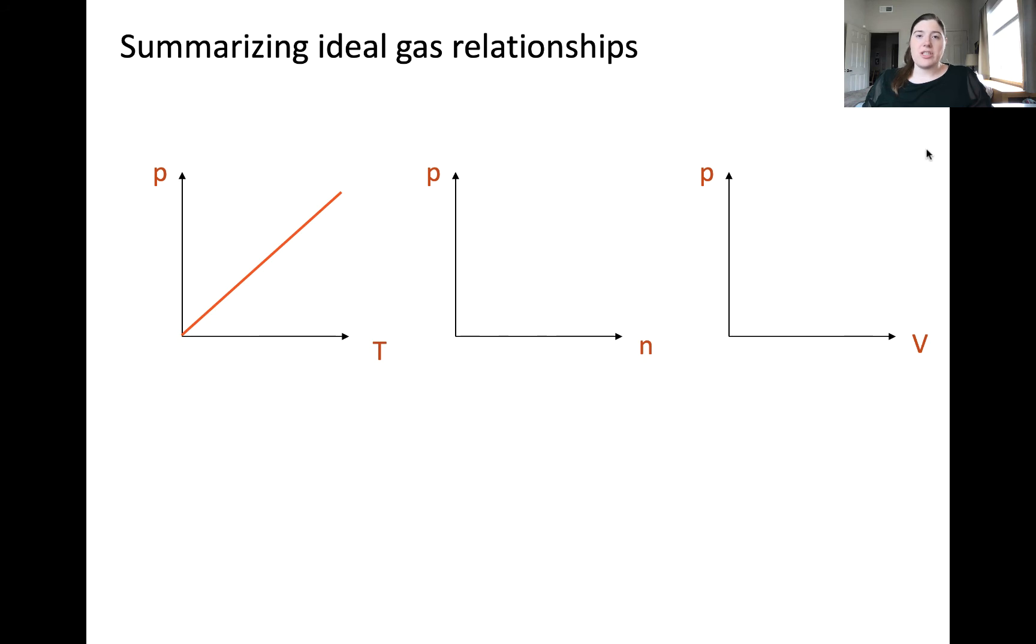These relationships between pressure and other variables that describe gas phase systems can be summarized in the following way. As temperature increases, so does pressure. These are directly proportional. As the amount of gas in the container increases, so does pressure. Again, another direct proportionality. As volume of the container increases, pressure decreases. This is an inverse proportionality. Importantly, when we're comparing pressure with another variable, we're assuming all other variables are held constant.